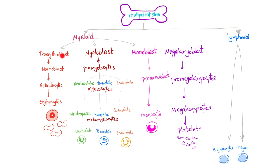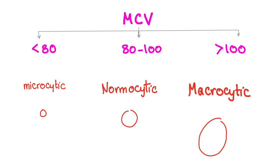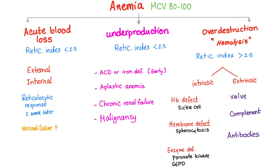The RBCs originate from the myeloid stem cells, which come from the multipotent stem cells. The MCV determines the type of anemia depending on the size of the red blood cell. Hemolysis, either intravascular or extravascular, is normocytic — the MCV is normal, between 80 to 100. Normocytic anemia occurs due to three main reasons: acute blood loss, underproduction, or over-destruction.